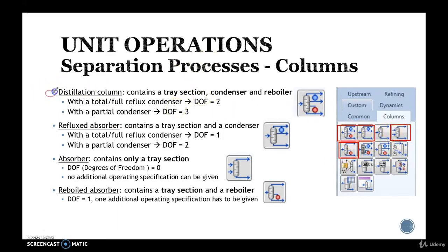Number one and most important one is the distillation column which is right here. It has a condenser and a boiler. The reflux absorber will have a condenser. The reboiler absorber will have a boiler. And the absorber will have no reboiler or no condenser.